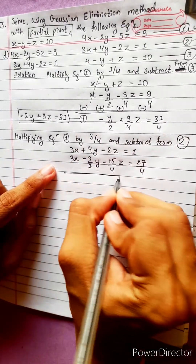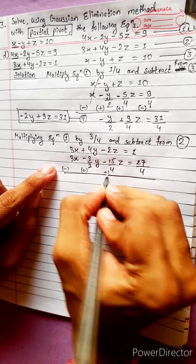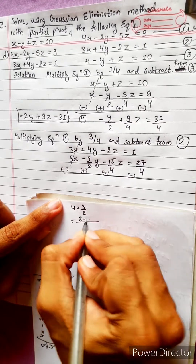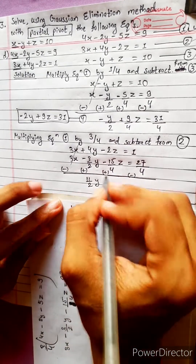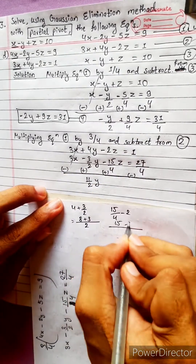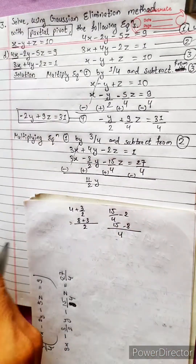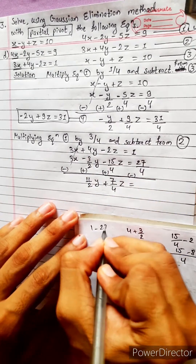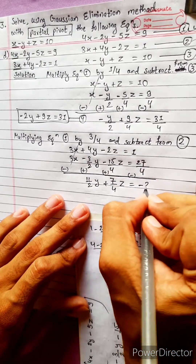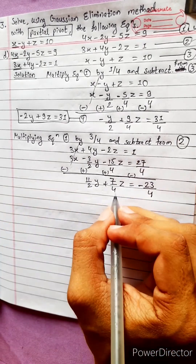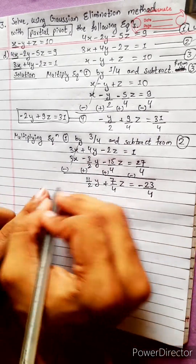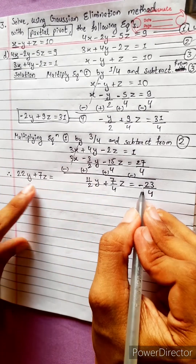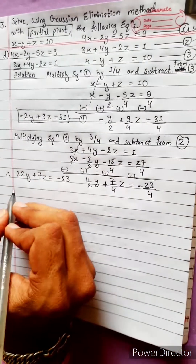Now subtract the scaled Equation 1 from Equation 2. The 3x cancels. For y: 4 plus 3/2 equals 11/2, so 11/2 y. For z: minus 2 plus 15/4 equals 7/4, so plus 7/4 z. Right-hand side: 1 minus 27/4 equals minus 23/4. Multiplying through by 4: 22y plus 7z equals minus 23. This is Equation 5.